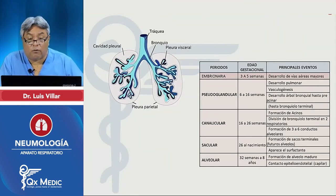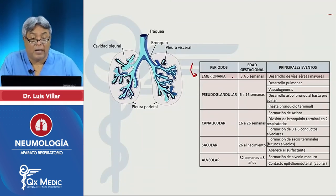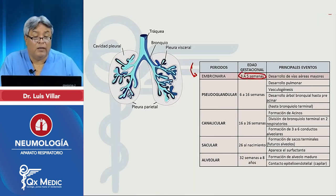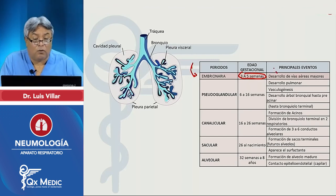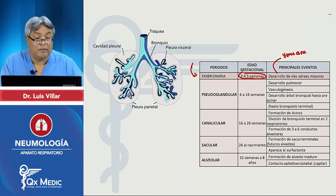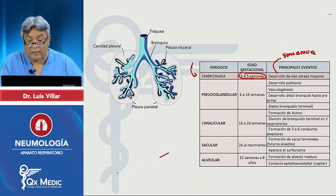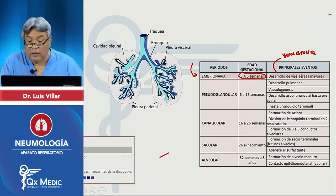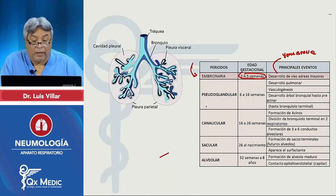Entonces, vamos formando progresivamente: la etapa embrionaria de 3 a 5 semanas corresponde al desarrollo de la vía aérea mayor, básicamente las yemas bronquiales. De ahí vamos a tener la etapa pseudoglandular.